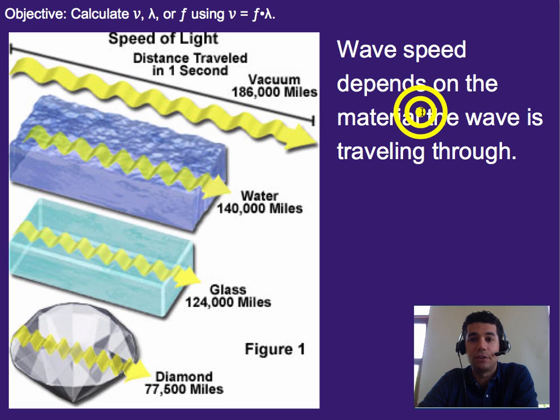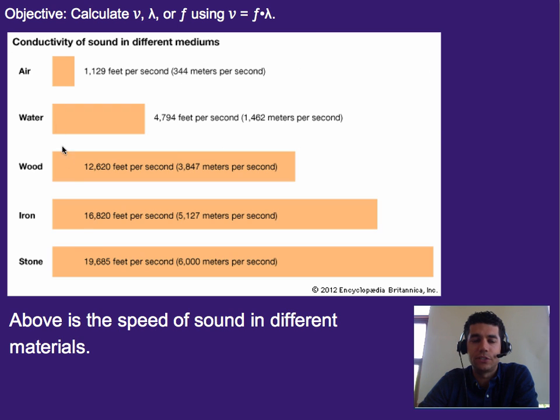The reason why is because whatever material a wave is traveling through determines how fast that wave can travel. So the wave speed depends on the material it's traveling through. For sound, here's how it breaks down. In air, sound travels 344 meters per second. In water, it travels 1,462 meters per second.